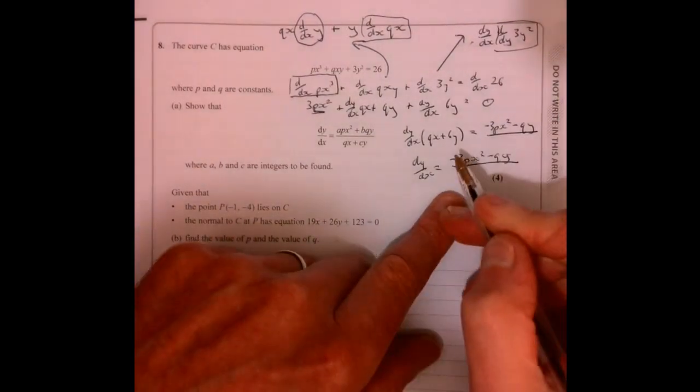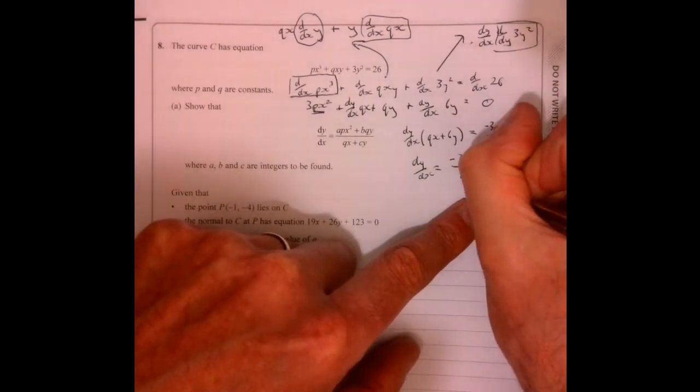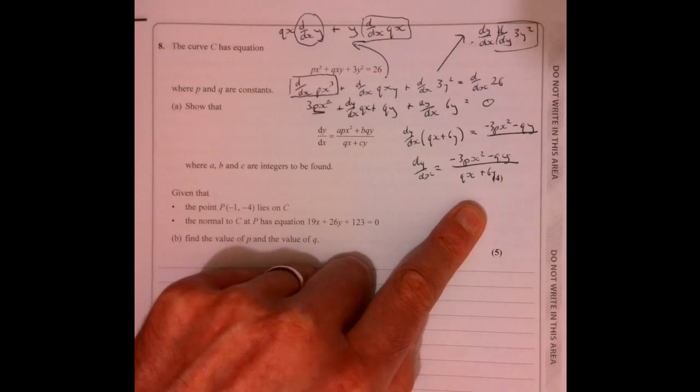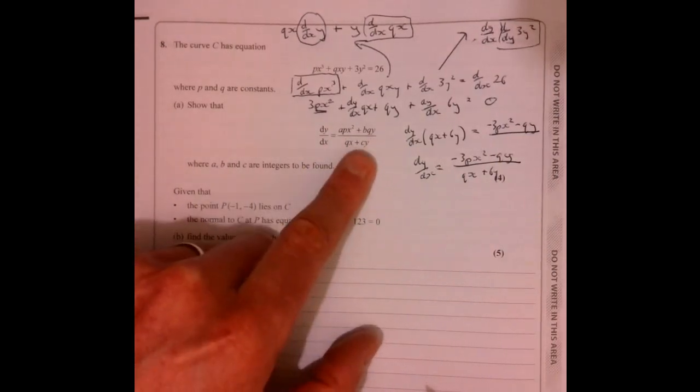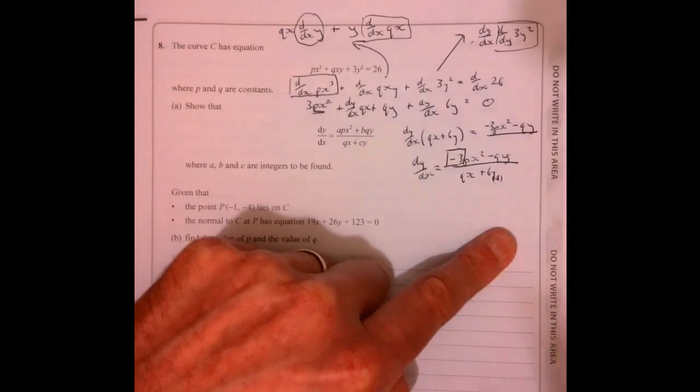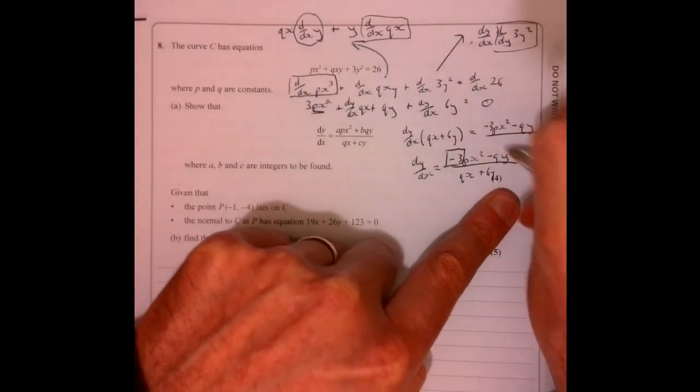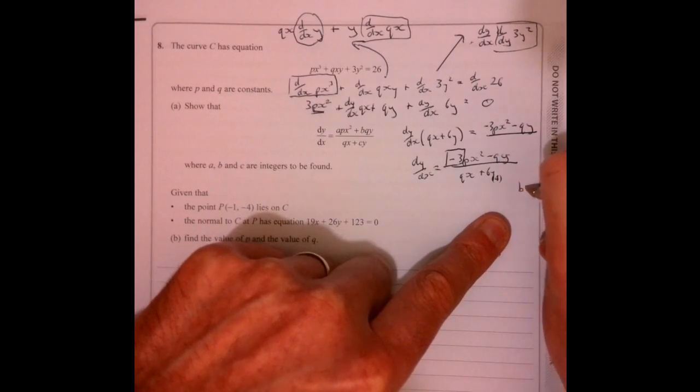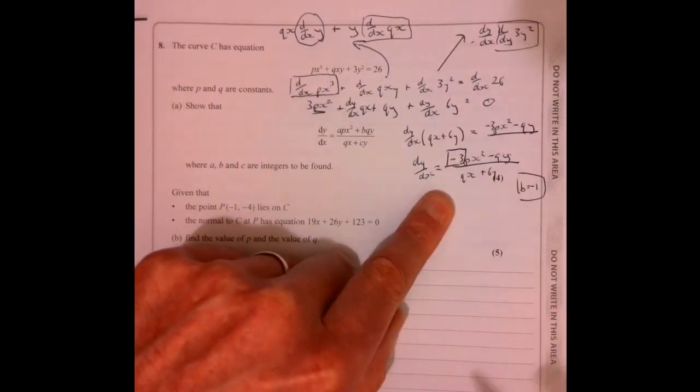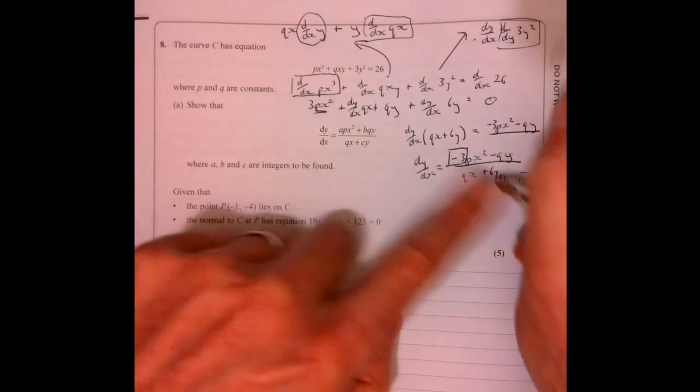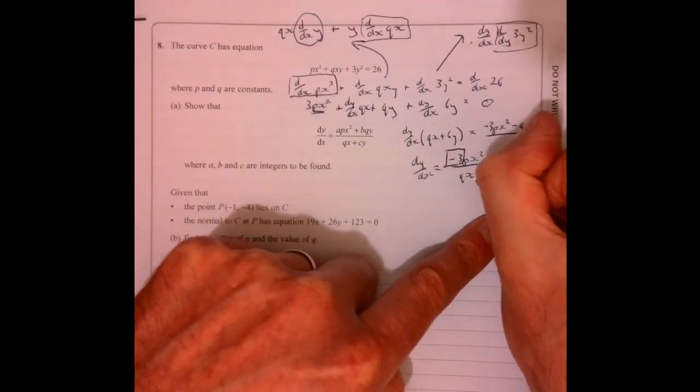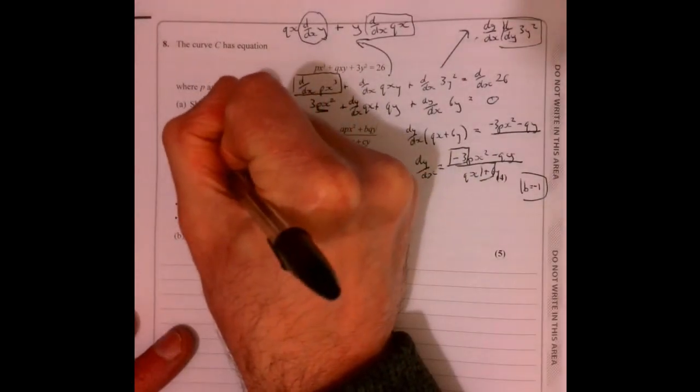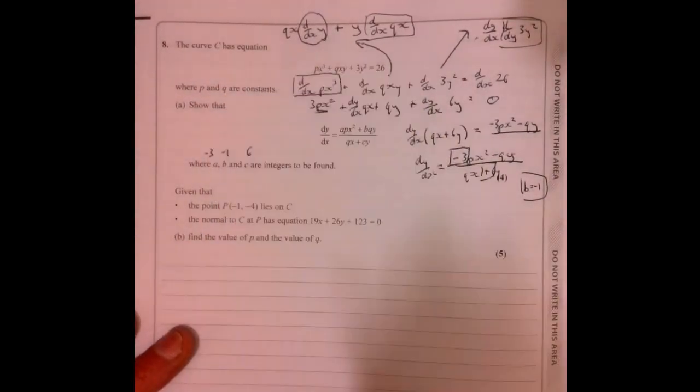Now we're going to divide by this, so dy over dx is equal to minus 3px squared minus qy, all of that divided by this part, so qx plus 6y. What's a, what's b, and what's c? So a is that bit, b must be minus 1, that's a, and then we've got c just down there, that must be the 6.